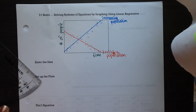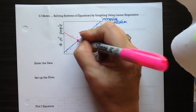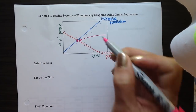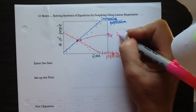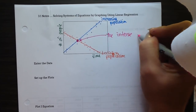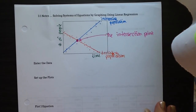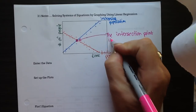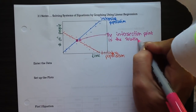Remember that when we look at a graph, the solution to the system of equations is where those two lines intersect. Right here at this intersection point is the solution to that system of equations.